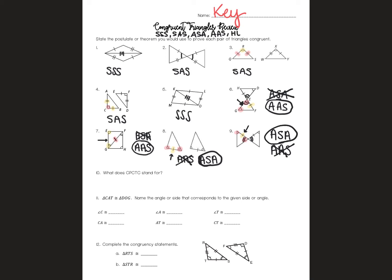For number 10, CPCTC stands for 'corresponding parts of congruent triangles are congruent.'